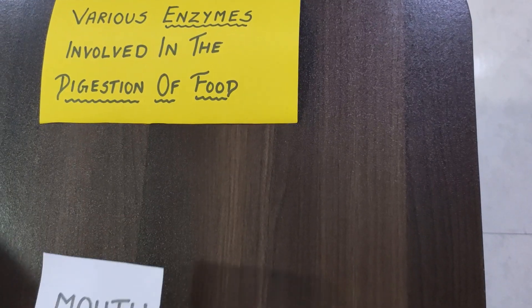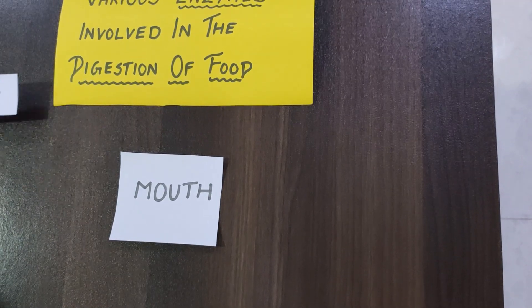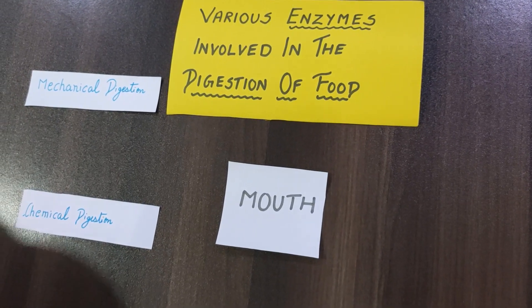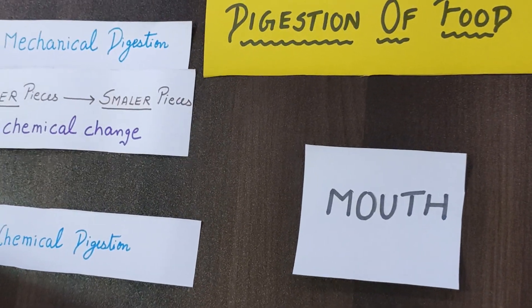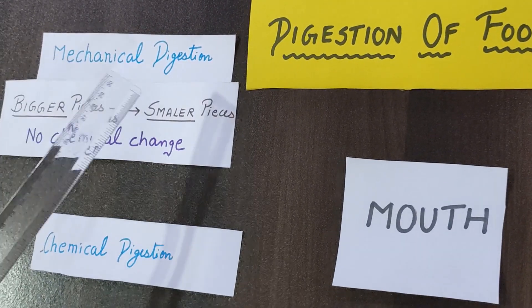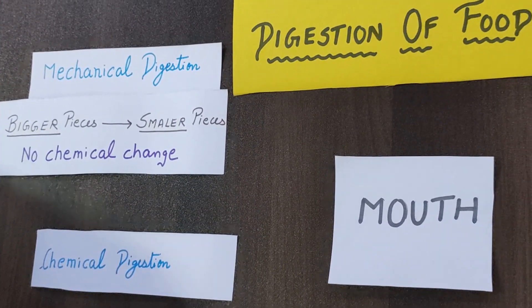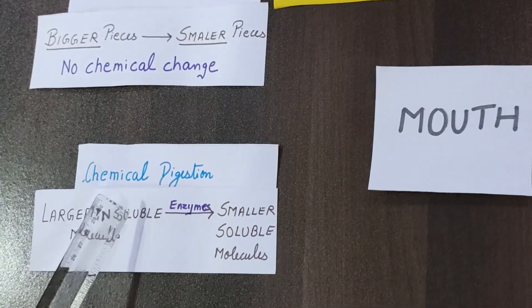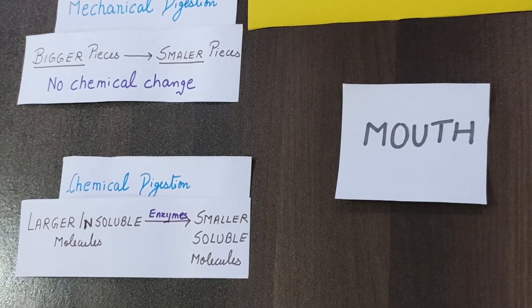Initially we see what happens to the food when we put it inside our mouth. There are two types of digestion which take place: one is mechanical digestion and the other one is chemical digestion. Mechanical digestion is when the food particles are converted from bigger pieces to smaller pieces — there is no chemical change. Chemical digestion is when the larger insoluble molecules get converted to smaller soluble molecules in the presence of enzymes.